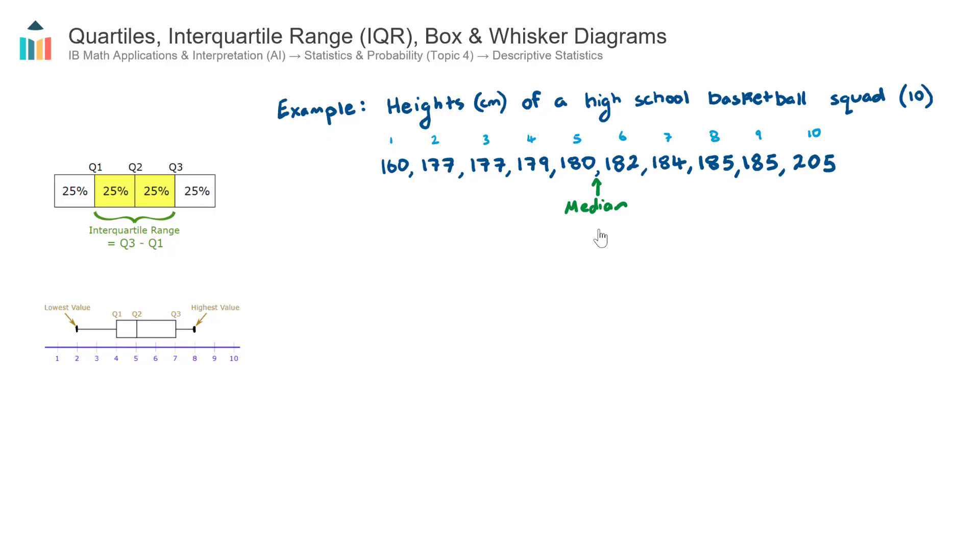And the median will be the average of 180 and 182, and that'll be 181 centimeters. So the median essentially breaks the data set up into a lower half, so players 1 through 5, and an upper half, players 6 through 10.